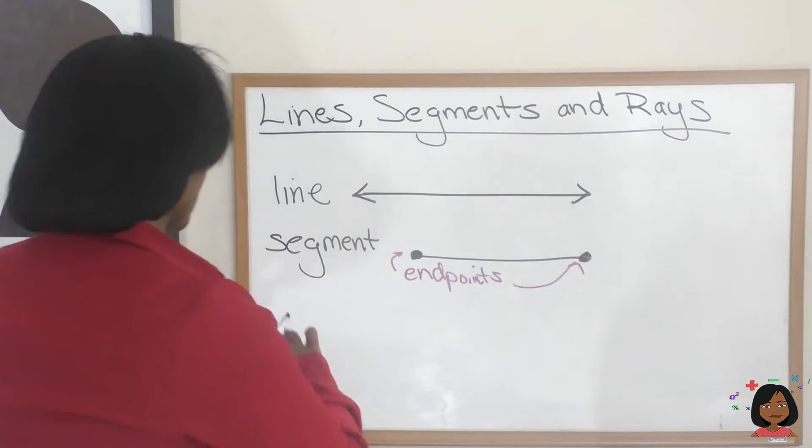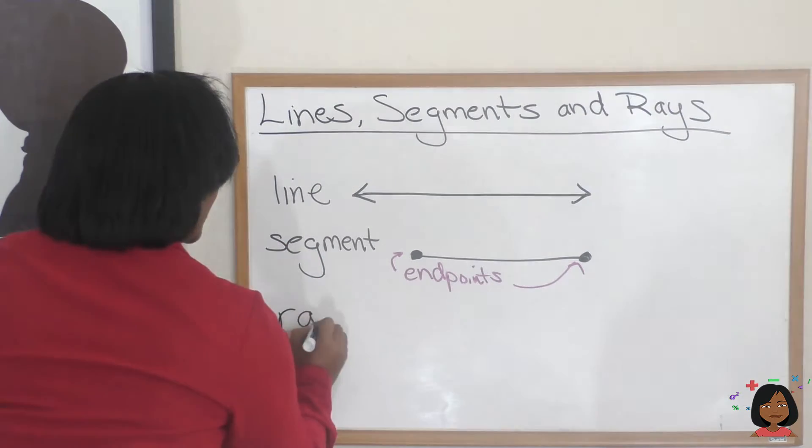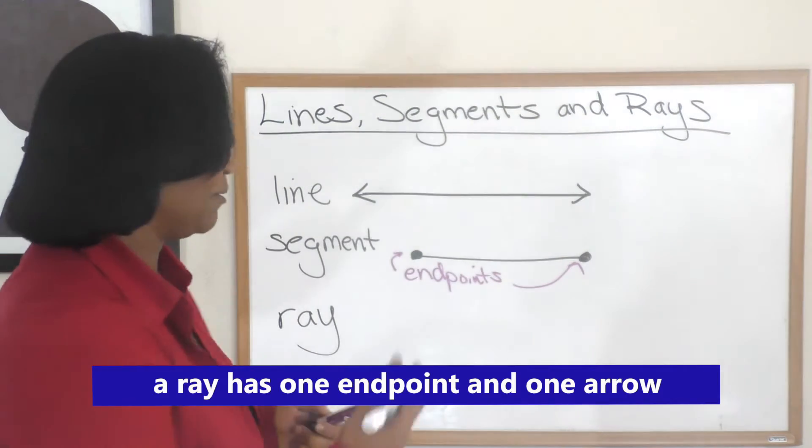There's one more I want to show you. It's called a ray. A ray is a combination, line and segment. Here's what I mean.